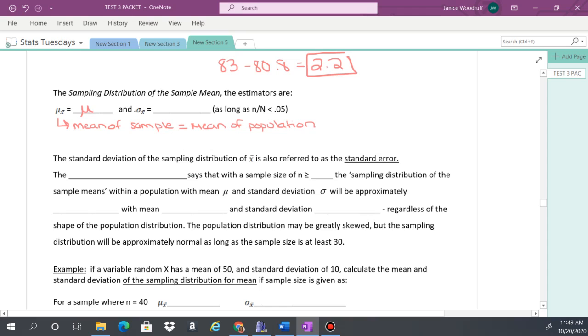And then the standard deviation of x bar, you have a new formula here. You'll have to take the population standard deviation and then find the sample standard deviation. And to do that, you're going to do the population standard deviation, sigma, over the square root of the sample size.